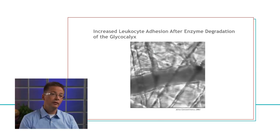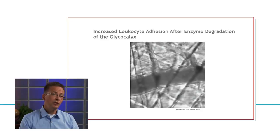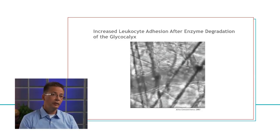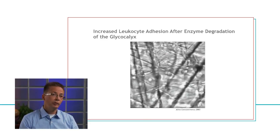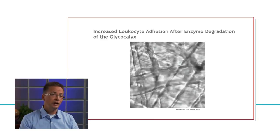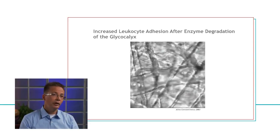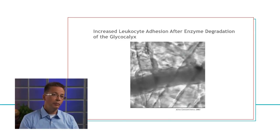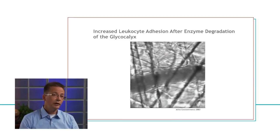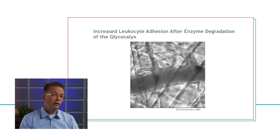Another consequence of damaged glycocalyx is shown in this video. Here we see a small venule where blood flows through the lumen. To study the effect of glycocalyx on the adhesion of inflammatory cells to the vascular wall, we can inject a saline solution or a solution containing enzymes to break down glycocalyx and measure the level of adhesion of the white particles — the leukocytes or inflammatory cells. Under control conditions, those little white particles slowly roll over the surface of the vessel wall, patrolling for infection, but as long as there's no infection they do not stick to the vessel wall and do not start the inflammatory process.